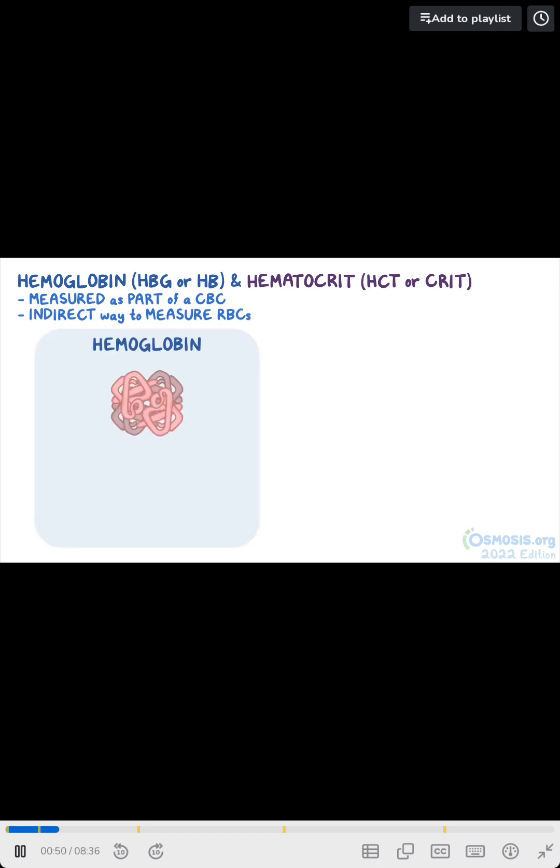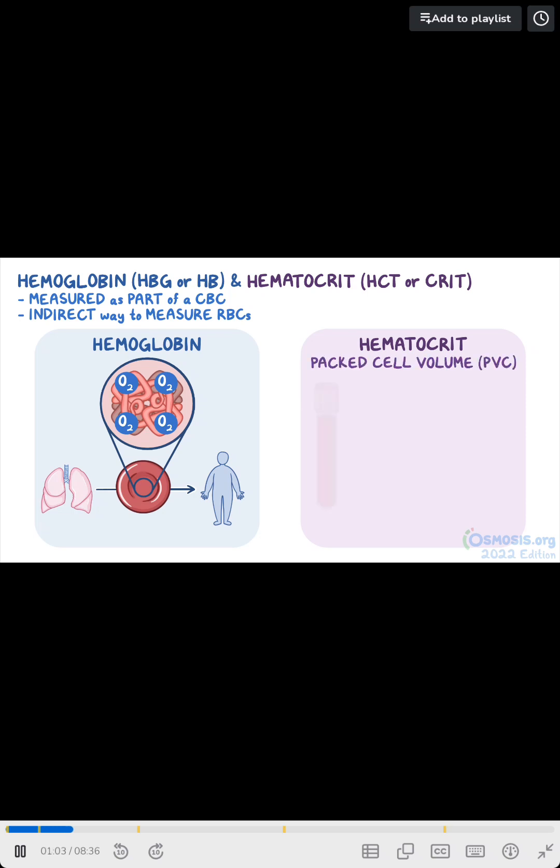Hemoglobin is an iron-containing protein found in RBCs, which allows them to carry oxygen from the lungs to peripheral tissues. The hematocrit represents the percentage of packed RBCs, also referred to as the packed cell volume or PVC, in whole blood, that's obtained after centrifuging part of the sample to allow for complete sedimentation of the RBCs.